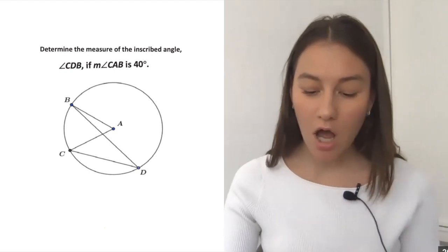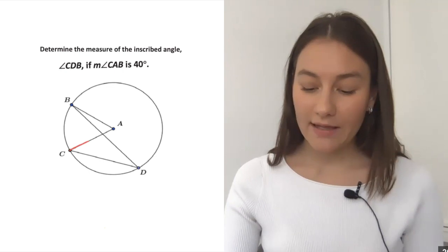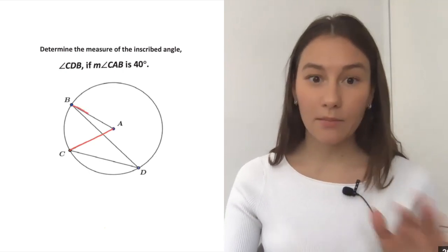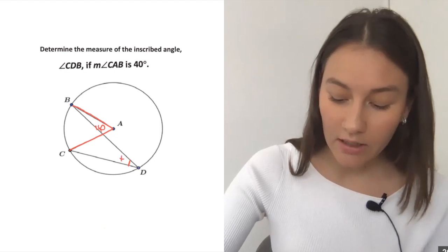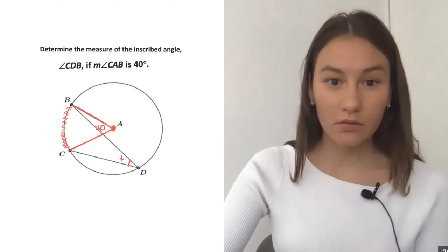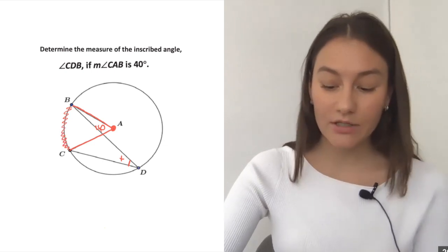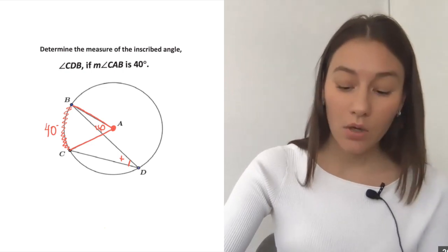Let's work on one example together. So determine the measure of the inscribed angle CDB if you're given the measure of angle CAB is 40. So I'm going to mark up my diagram. CAB is 40 and I'm looking for this angle here. Well, right off the bat, I noticed CAB is my central angle, right? It's that angle being formed at the center. So I know my arc is going to be exactly equal to that angle, which is 40.